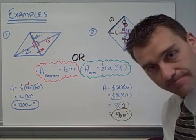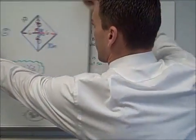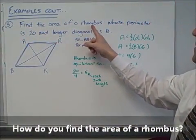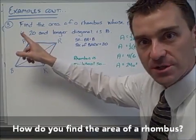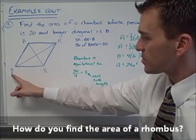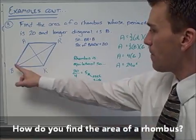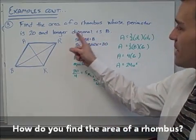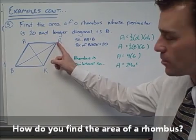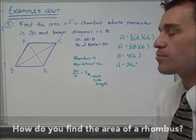Example number three is a word problem: find the area of a rhombus whose perimeter is 20 and whose longer diagonal is 8. In the picture I've labeled this rhombus BARK. The longer diagonal BR is 8, so that whole distance is 8, and the perimeter is 20.